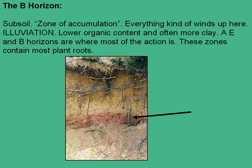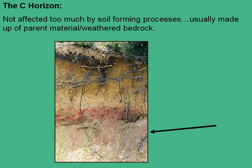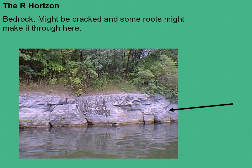As you get into the C-horizon, you're really not affected too much by the soil-forming processes. The C-horizon is usually made up of weathered bedrock that's just above the bedrock layer, which is called the R-horizon. While you might have some tree roots making it into the bedrock when you have very thin soil layers above it, in areas where you have bedrock really close to the surface, you can see some roots making it in and some processes of weathering affecting it. But really the R-horizon is the last level of a soil profile.